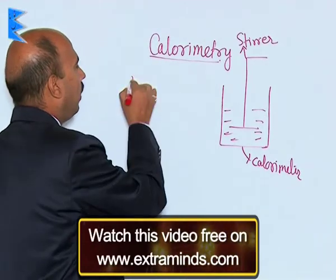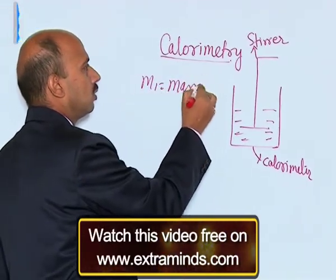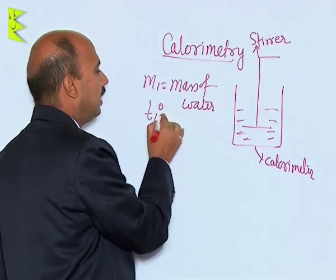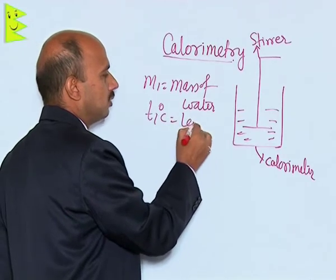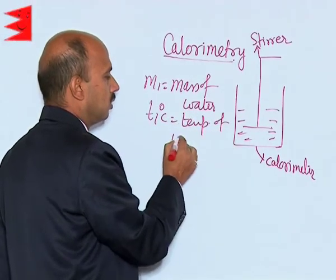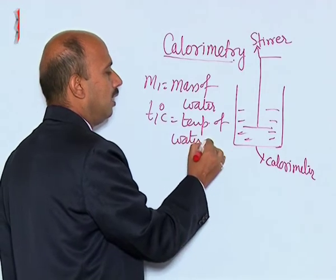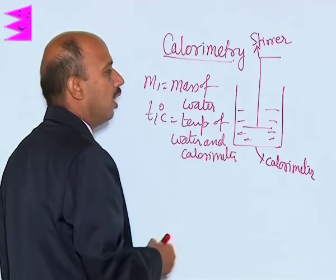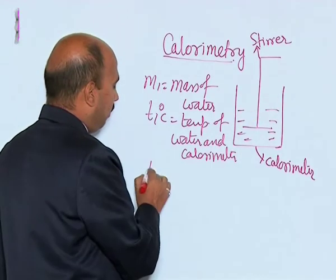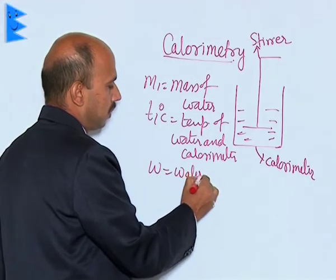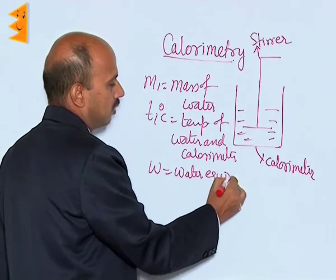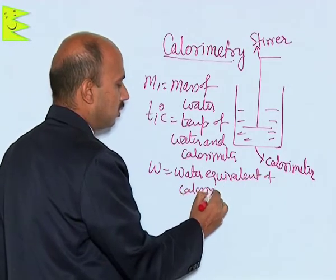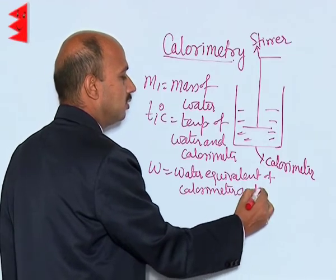Suppose M1 is the mass of water, T1 is the temperature in degrees Celsius of the water and calorimeter. W is the water equivalent of the calorimeter and stirrer.